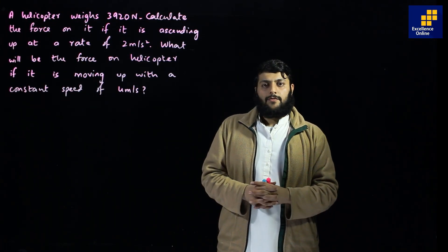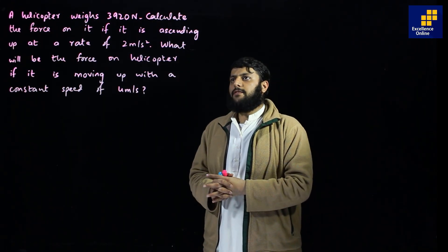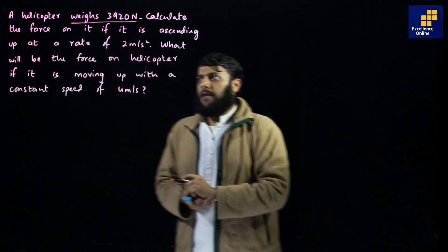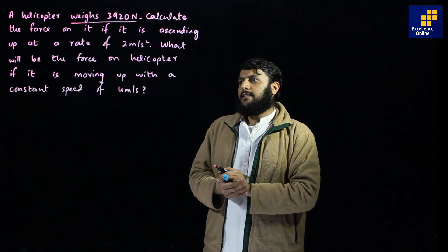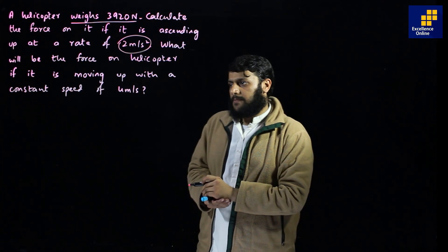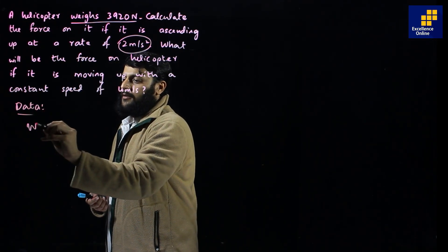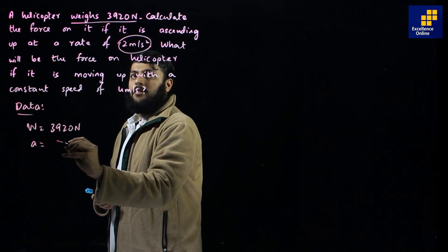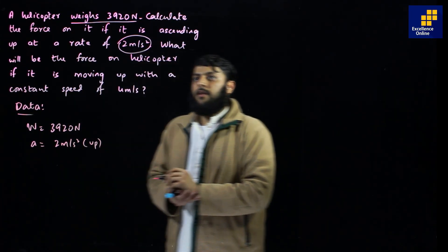We are on a sequence of solving numericals of first-year physics. Question number four says: a helicopter weighs 3920 Newtons. We are given the weight and need to calculate the force if it is ascending at a rate of 2 meters per second squared — this is the acceleration for the first part.